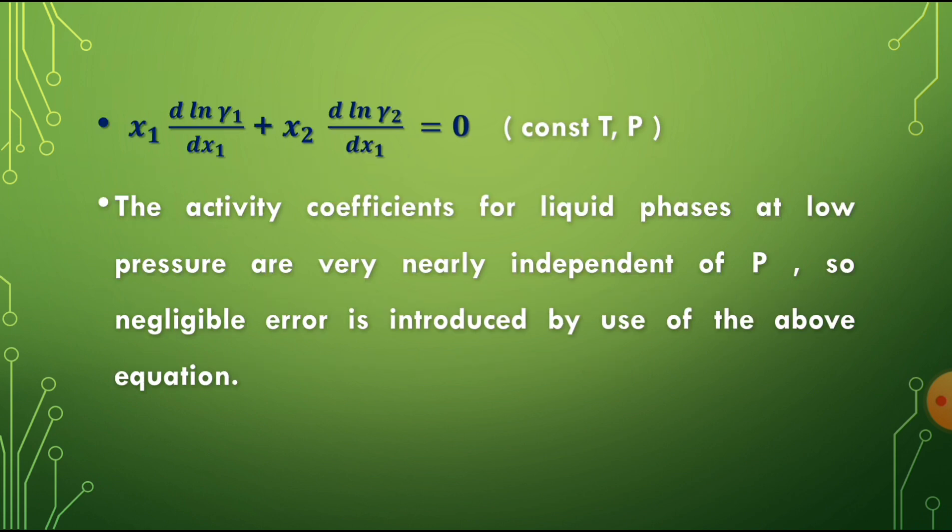From the Gibbs-Duhem equation for a binary system: x1 d(ln gamma1)/dx1 plus x2 d(ln gamma2)/dx1 equals 0 at constant temperature and pressure. The activity coefficients for the liquid phase at low pressure are very nearly independent of pressure, so negligible error is introduced by using this equation. When these terms become zero, the activity coefficients are essentially independent of pressure.